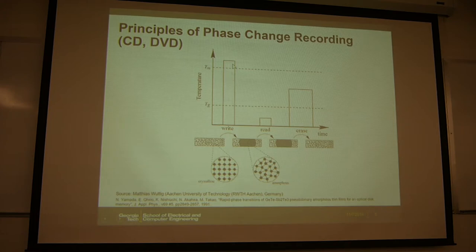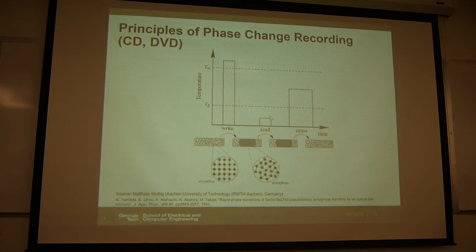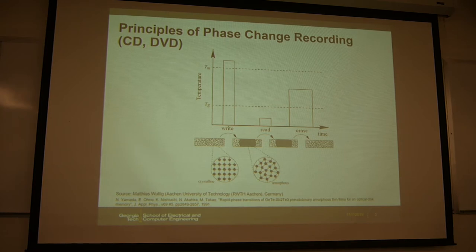You apply heat to the material, and if you quickly remove the laser, the device temperature goes above the melting temperature and you quench it, so the device will go to the amorphous state. Reading is also done optically, because the material in crystalline and amorphous states will have different refractive indices. You can look at the reflection of your light and tell it's zero or one.